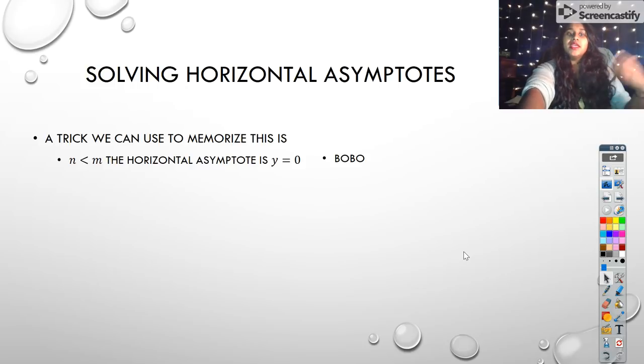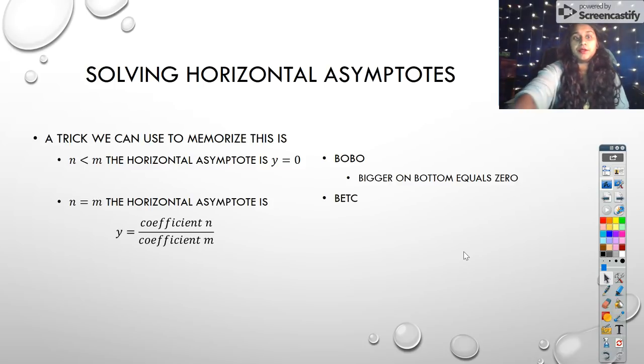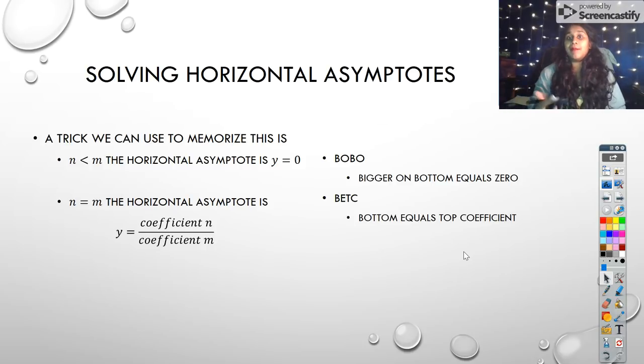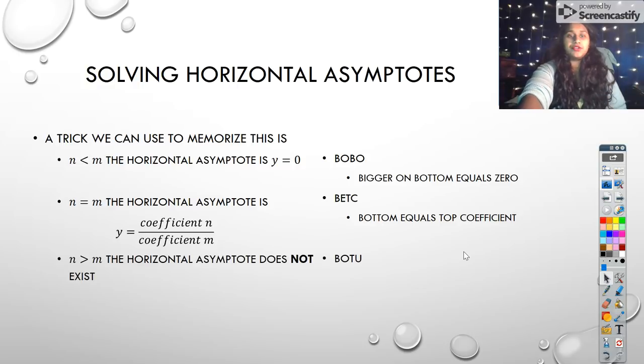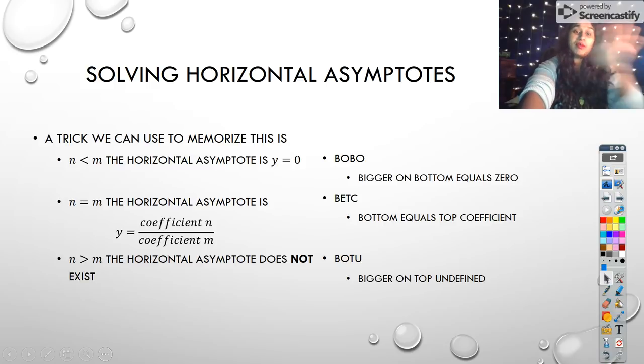So this is just a little bit of memorization. But to make it even easier, there's a trick we can use to memorize this. If we know that our numerator is smaller and the denominator has a bigger one, we call this BOBO. This means bigger on bottom equals 0. If it's bigger on bottom, and we're talking about the exponent, the largest exponent, then that means I have a horizontal asymptote at 0. When they are equal, we say this is BETCY. So that's bottom equals top, then I use my coefficient. And again, you use the coefficient of the highest degree. And finally, if your degree on top is higher and is greater than m, then we call this BOTU. And that means bigger on top is undefined. So if it's undefined, then we can't have anything happening there. That means there is no horizontal asymptote. So again, those three little terms are BOBO, BETCY, BOTU. BOBO means bigger on bottom equals 0. BETCY means bottom equals top coefficient. BOTU means bigger on top undefined. However you want to memorize this is fine as long as you find a way to memorize this. You can't just recall horizontal asymptotes with magic. You have to have something in place to recall that. So make sure you memorize this page.